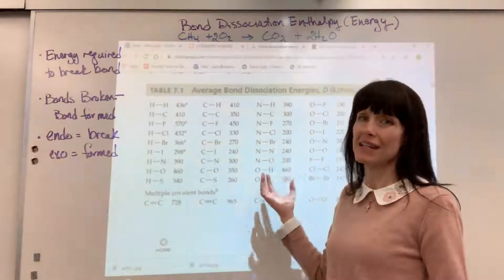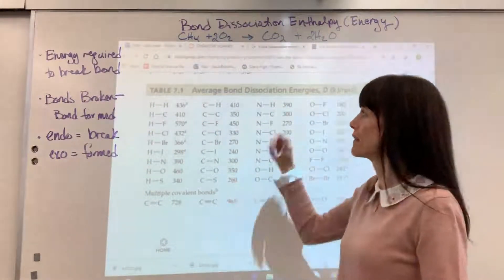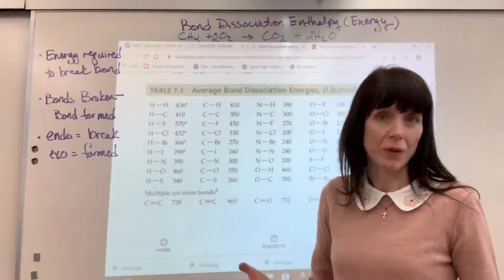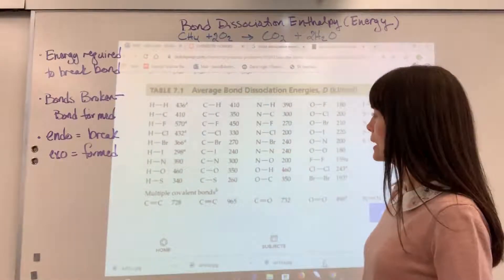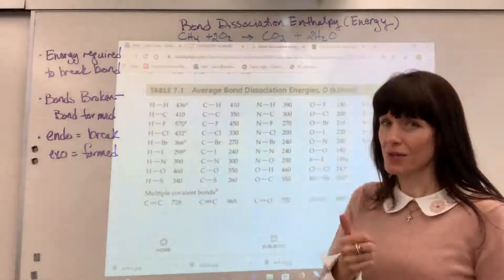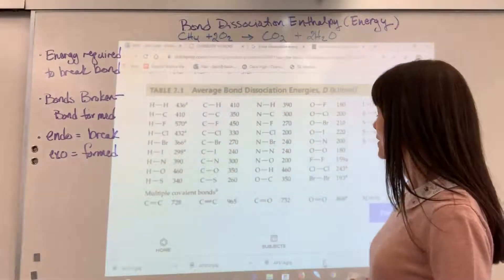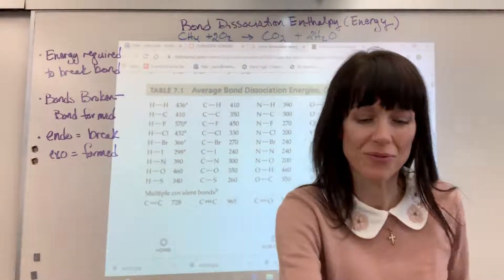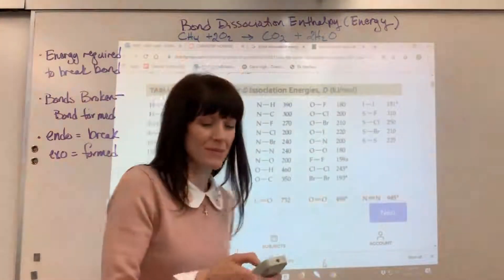So you're going to have to be given a table or given a list in the question of bond dissociation enthalpies or energies. And you'll just notice the unit, kilojoules per mole, and the number that's associated with the bond that you're looking for. So let's do a problem together.